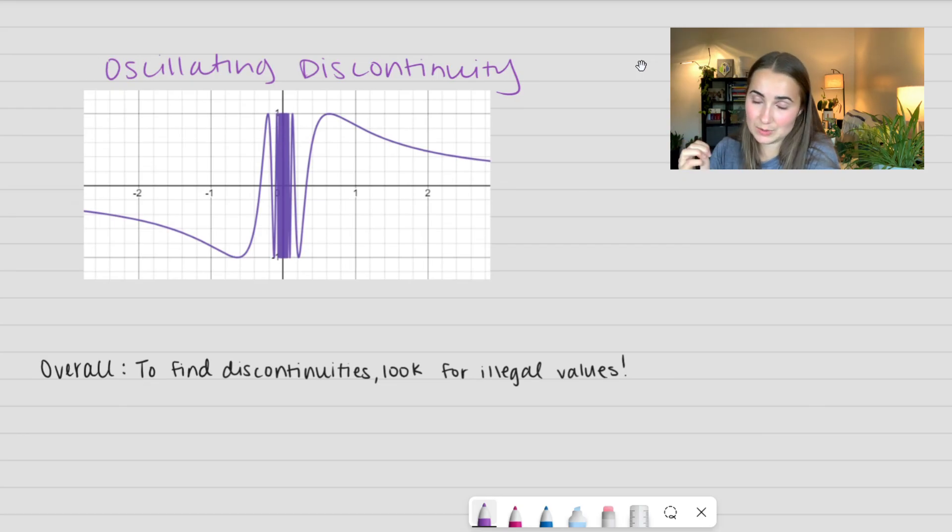These are the different types of discontinuities we have. But overall, Allison advice, to find discontinuities, you just look for the illegal values. Whatever you can't divide by, whatever you can't take the square root of, on and on. You're just looking for illegal values.